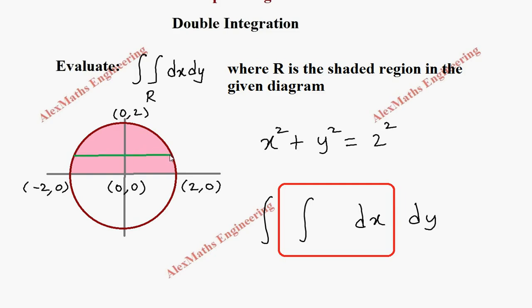From the equation, the value of x is √(4-y²). On this side it will be negative and here it will be positive, so we have -√(4-y²) and +√(4-y²). Then the vertical strip ranges from 0 to 2, that is the y limit.